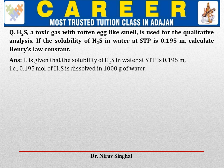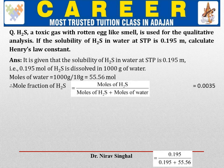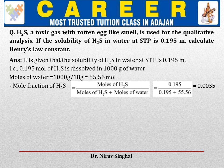Now we need to calculate the moles of water. Moles of water = 1000 divided by molar mass of water 18, which equals 55.56 moles. Now the mole fraction of H₂S = moles of H₂S divided by (moles of H₂S + moles of water), the total moles of all components in the solution. Moles of H₂S is 0.195 and moles of water is 55.56. So the mole fraction of H₂S is 0.0035.